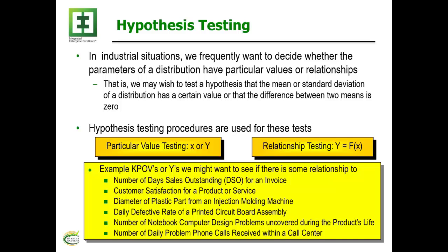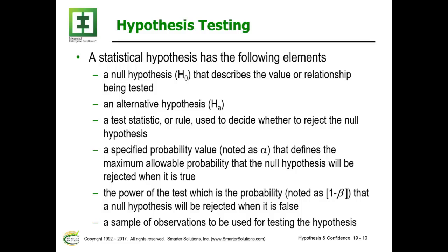Hypothesis testing has two pieces: the null hypothesis and the alternate hypothesis. The null hypothesis might state that two populations have equal means; the alternate would be that they don't. We use a test statistic or rule to decide whether to reject the null. The alpha value defines the maximum probability that the null hypothesis will be rejected when it is actually true. The power of the test is one minus beta — that is, the probability the null will be rejected when it is false.